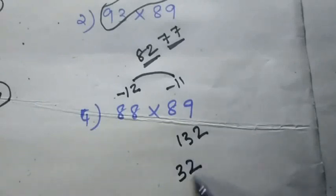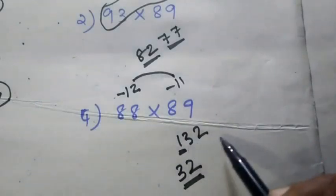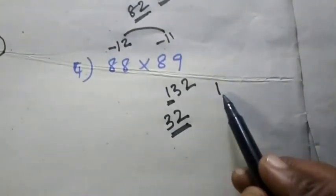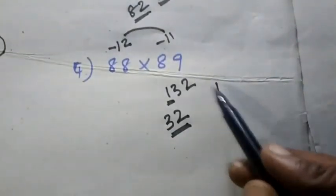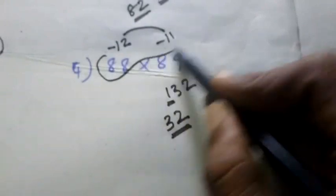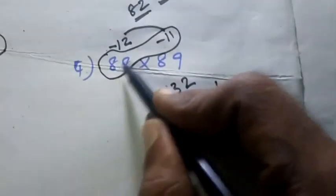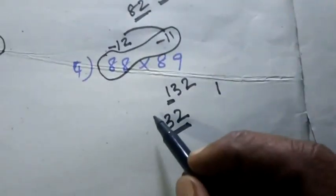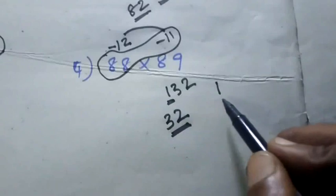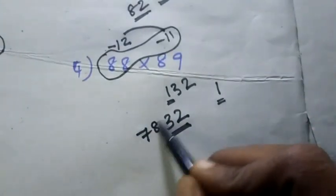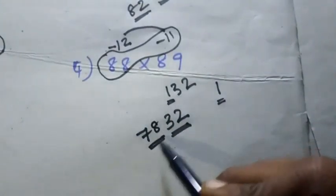Two digits — so 32. Carry. 88 minus 11: 77 plus 1 carry is 78.